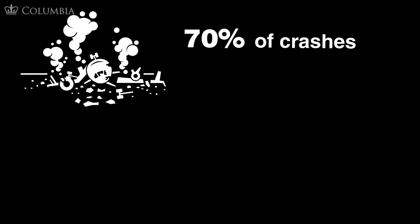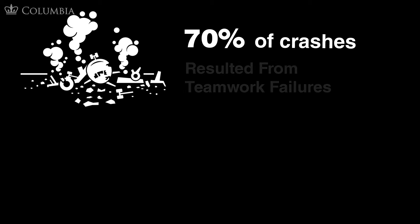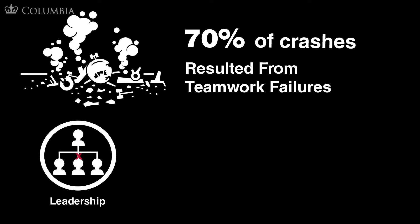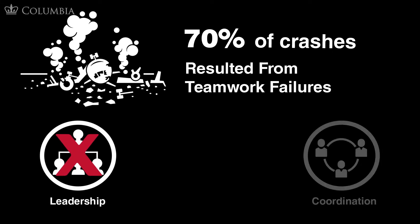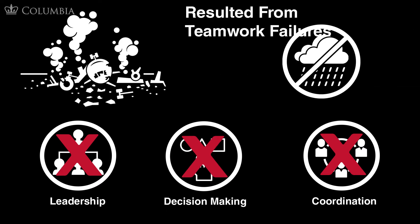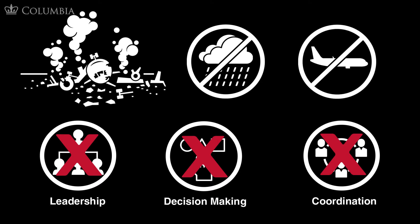During a meeting in the late 1970s, a report by NASA suggested that 70% of airline crashes resulted from human error caused by teamwork failures, specifically through a lack of leadership, team coordination, and decision making. These errors could not be attributed to weather conditions or equipment malfunctions.